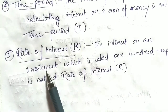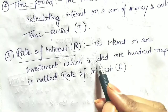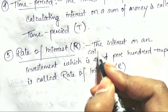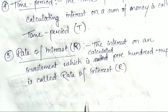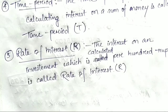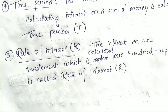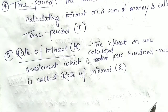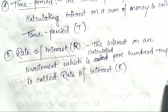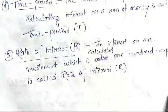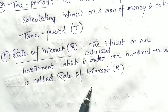Rate of Interest: the interest on an investment which is calculated per 100 rupees is called rate of interest. For example, 10,000 rupees deposited in the bank for 4 years at 3% — the 3% means for every 100 rupees you earn 3 rupees. This is called the rate of interest.